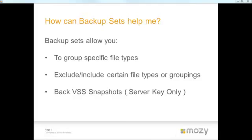Moving on from file selection — how can backup sets help me? Backup sets allow you to group specific file types. If you want to backup .doc or .docx files from your entire C drive, you select your entire C drive and include a rule to backup those document files. Whenever you add a new file of that type to your machine, it will be selected automatically because it falls into that backup set rule. Whereas if you select files within a specific folder but don't have that folder selected, new files added there won't be selected automatically.